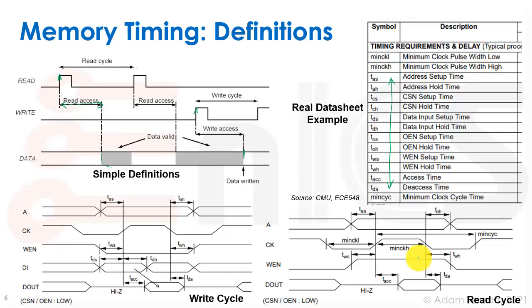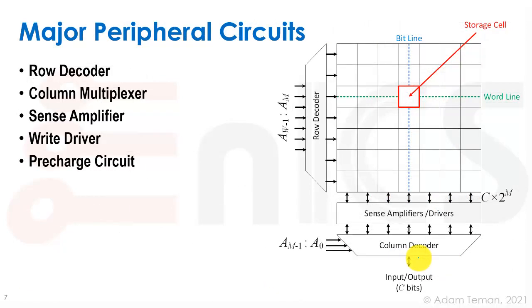The major peripheral circuits in an SRAM are: the row decoder, which we'll discuss in depth next; the column multiplexer or column decoder on the Y-axis that selects bits propagated to the data-out bus; the sense amplifiers, which detect whether a stored value is a 1 or 0; the write drivers, which drive a 1 or 0 on the bit lines to write to a cell; and the precharge circuitry, which charges the bit lines to VDD before a read operation. These are what we'll be covering in this lecture.